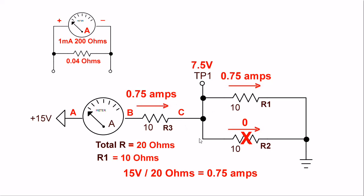If I take a voltmeter and measure from ground to test point 1, I'm going to read 7.5 volts. If I connect a voltmeter from B to C, I'm going to read 7.5 volts as well. 7.5 plus 7.5 equals 15 volts.